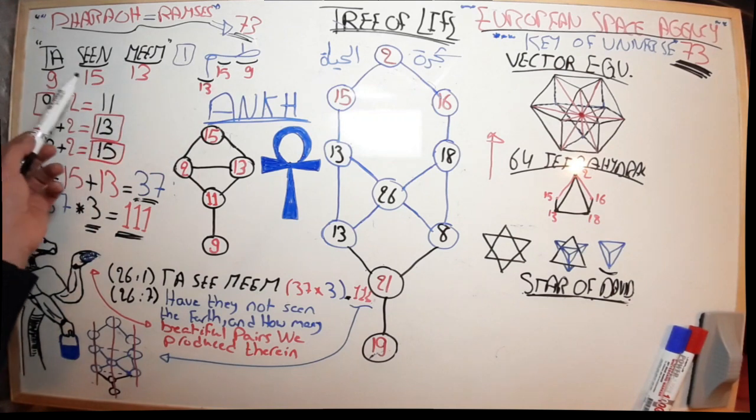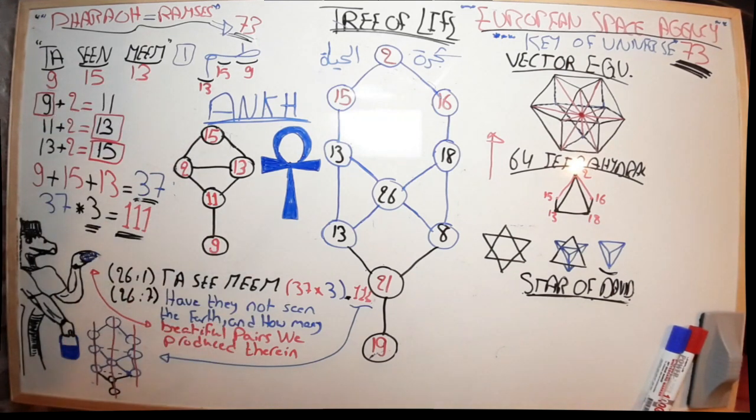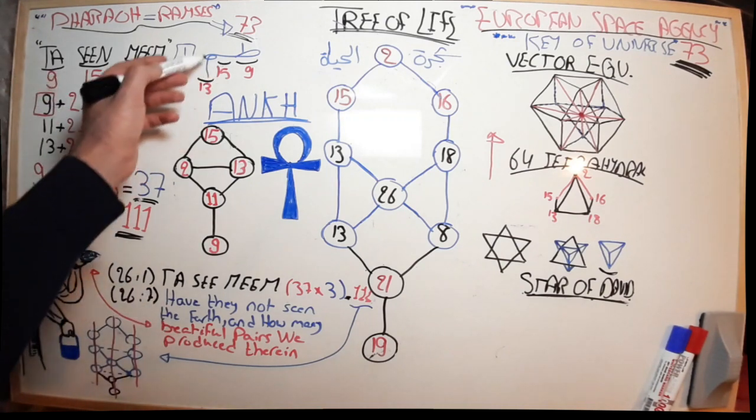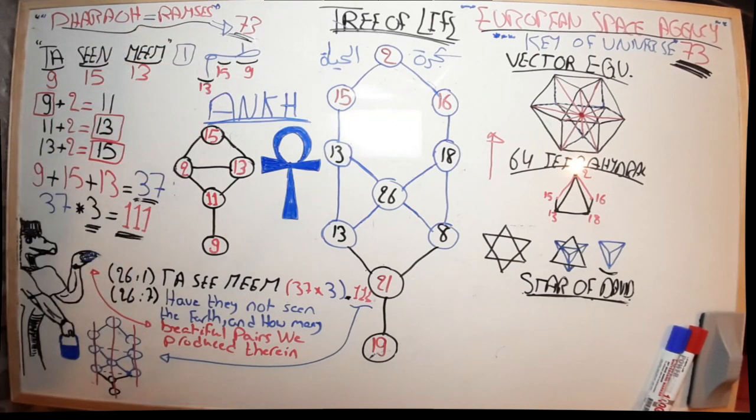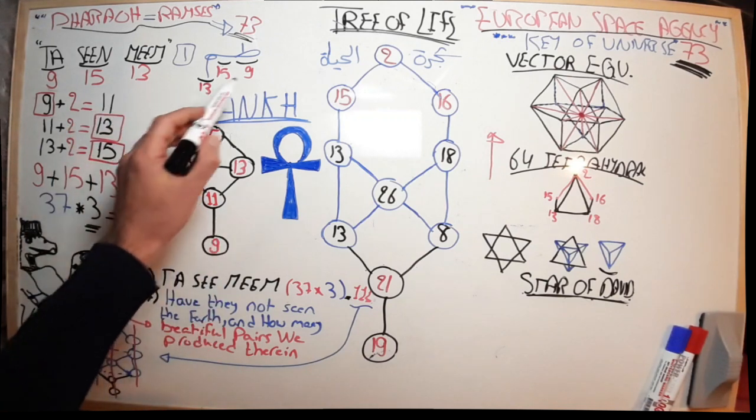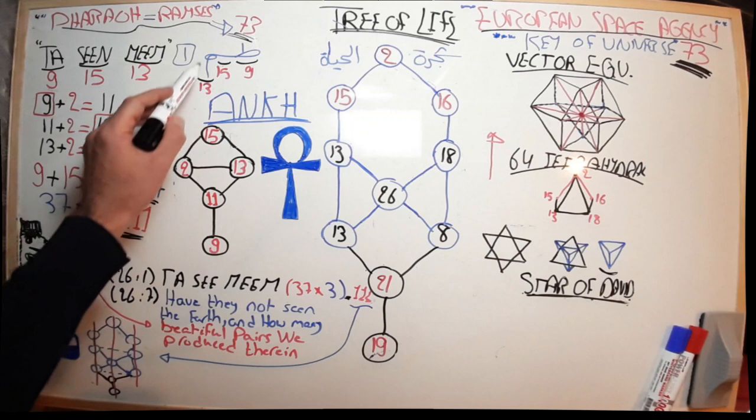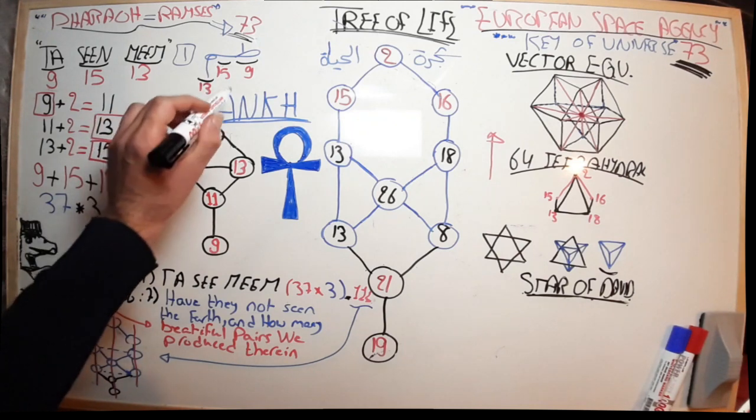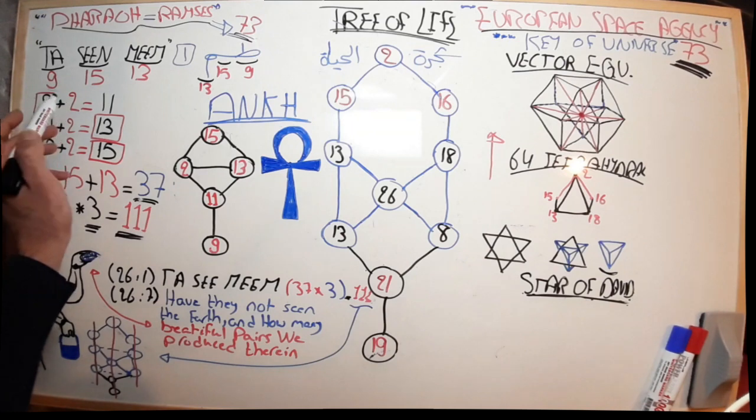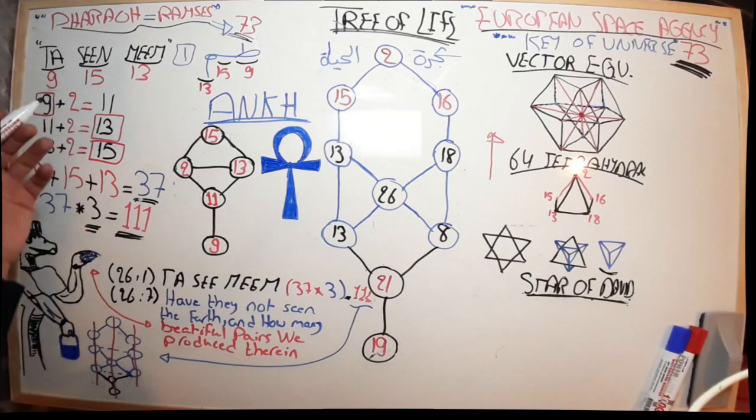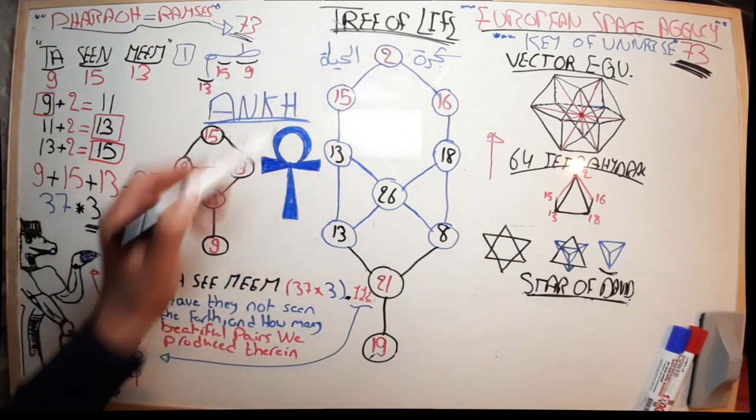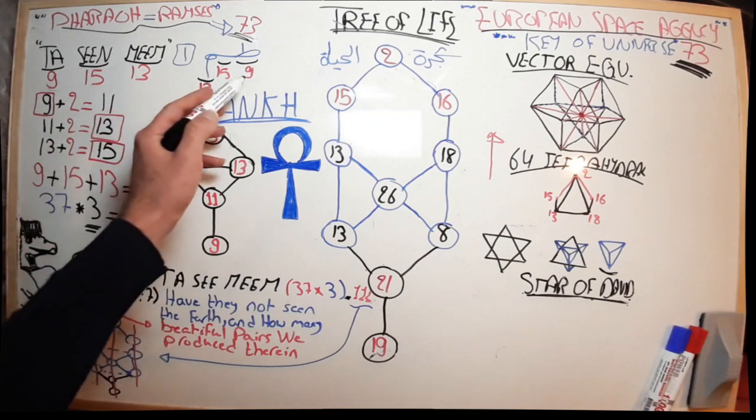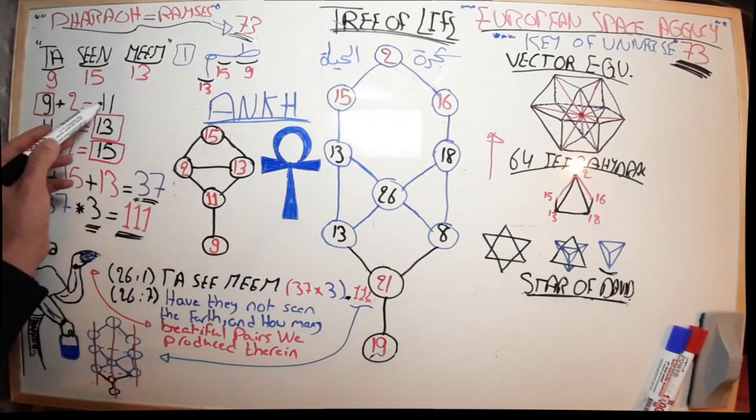Basically here we have three letters: Ta-Sin-Meem, with their alphabet numbers: 9, 15, 13. We mentioned earlier that while we were trying to decode those broken letters, we only follow one rule: we only use the numbers in those groups, and number 2, which is very important as we're going to see later on in the pyramids and at the top of the Tree of Life.